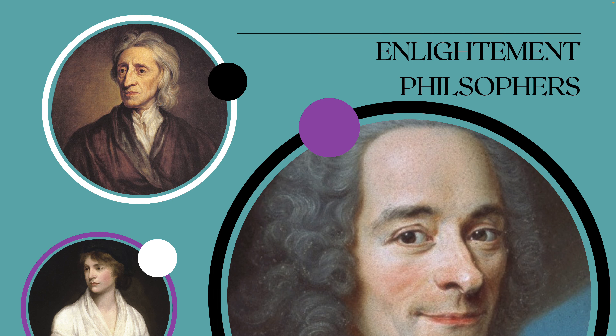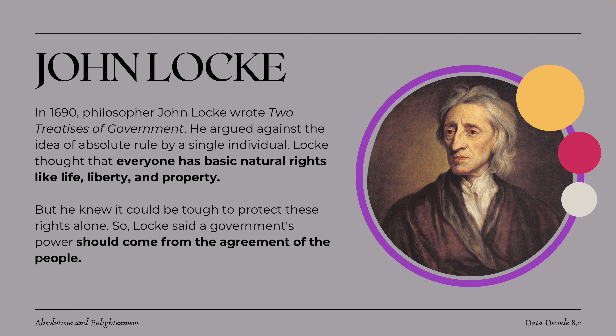Now let's talk about the philosophers who exercised Enlightenment principles. John Locke was a philosopher in the early 17th century who wrote Two Treatises of Government, arguing against absolutism or absolute rule by a single individual. Locke believed everyone has basic natural rights — life, liberty, and property — and argued that the government's power should come from an agreement of the people or the community, not from the monarchy itself.